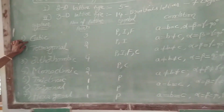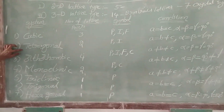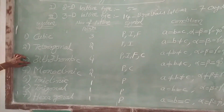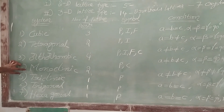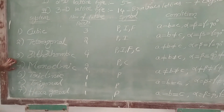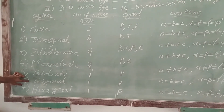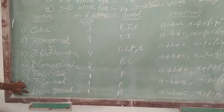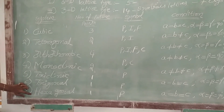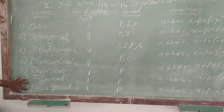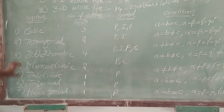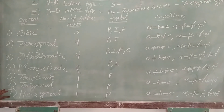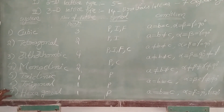The seven crystal systems are: first, cubic crystal system; tetragonal; orthorhombic; monoclinic; triclinic; trigonal; and last one, hexagonal crystal system. These are the 7 types of crystal systems.